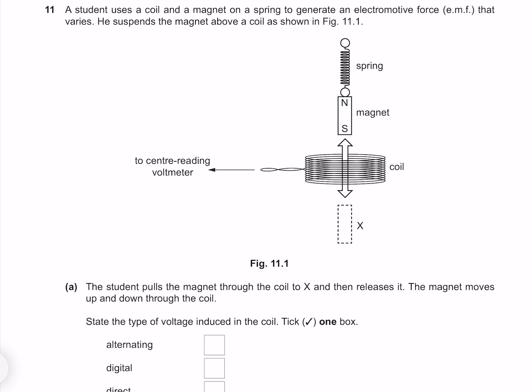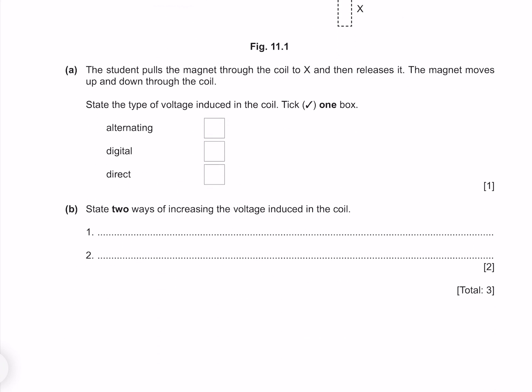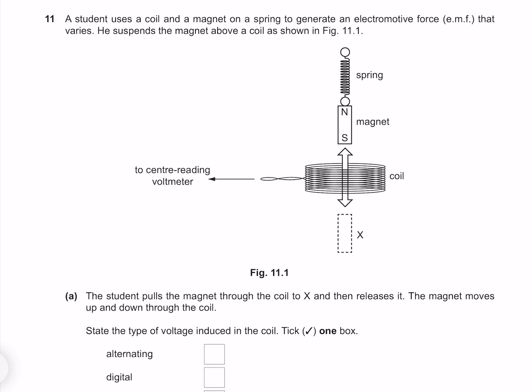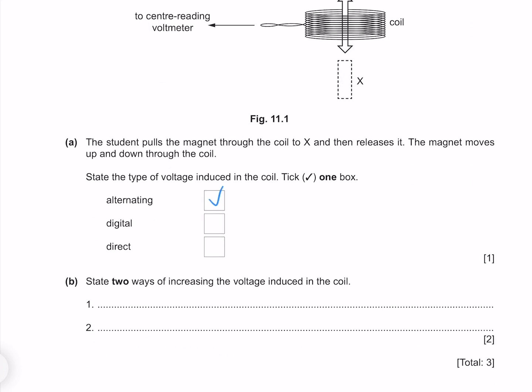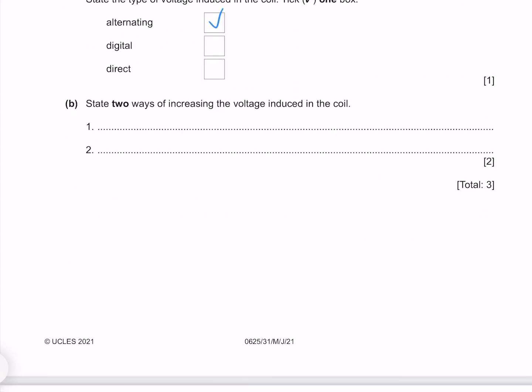The student uses a coil and a magnet on a spring to generate an electromagnetic force that varies. He suspends the magnet above the coil as shown in figure 11.1. The student pulls the magnet through the coil to X and then releases it. The magnet moves up and down through the coil. State the type of voltage induced in the coil. As the magnet moves up and down, we're going to have our electromotive force varying, which is going to produce an alternating current. State two ways of increasing the voltage induced in the coil. Firstly, we could increase the turns in the coil, or we could use a stronger magnet.